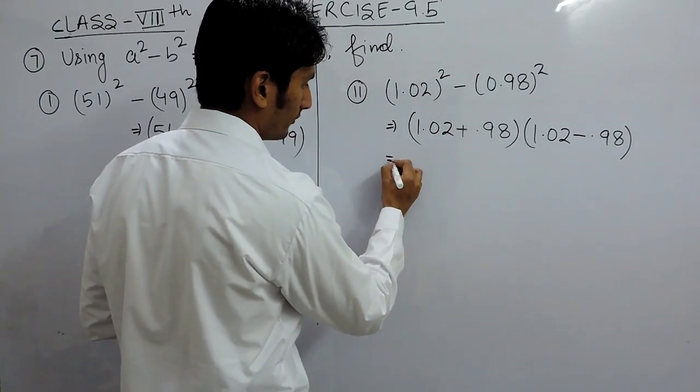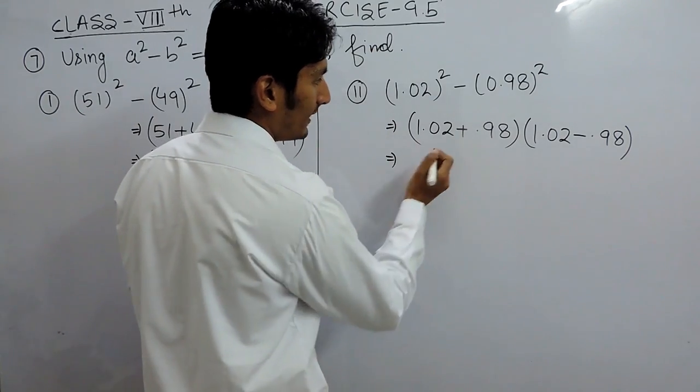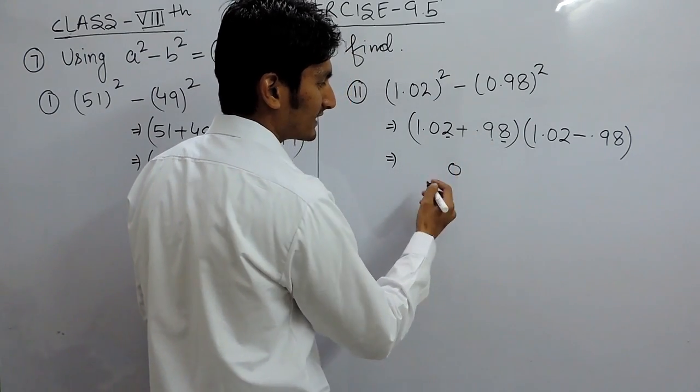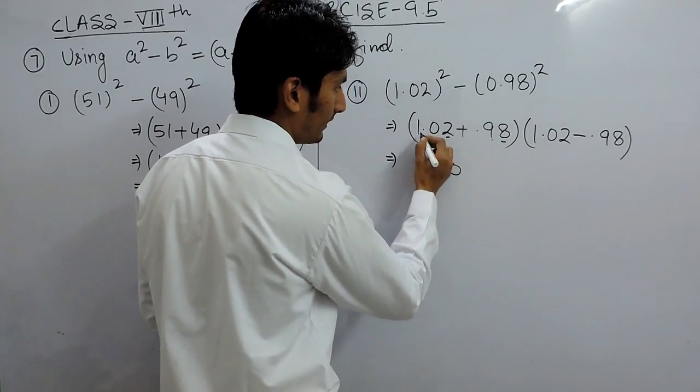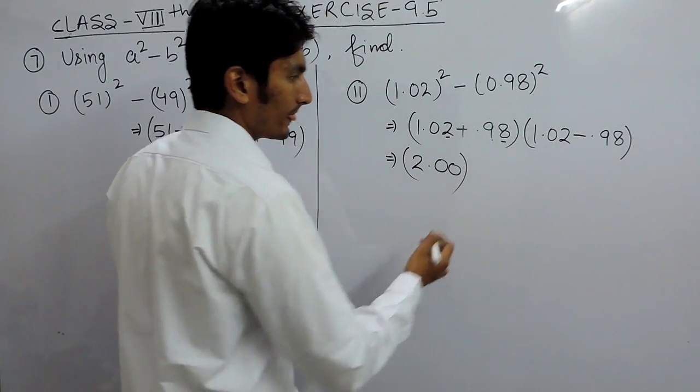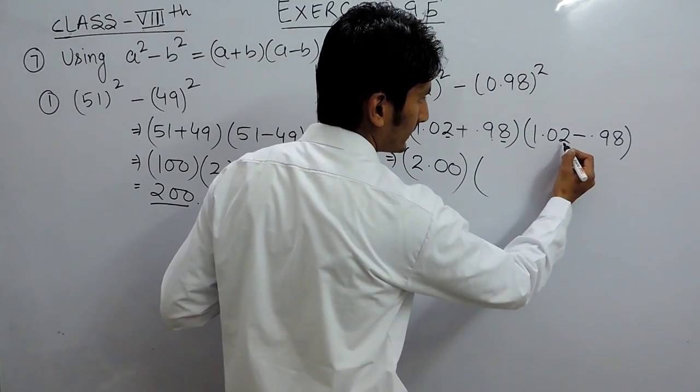Solving this, if I add 2 plus 8 is 10. 9 plus 1, 1 was carried, it is 10 and 1 plus 1 is 2. So, this will become 2 and if I have to subtract this...